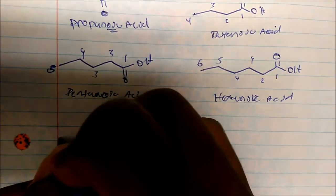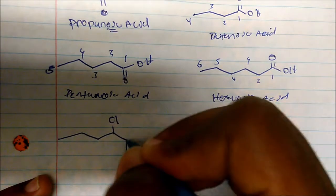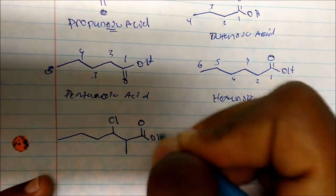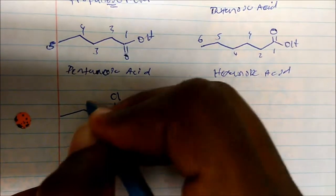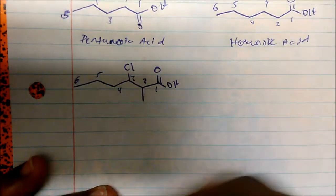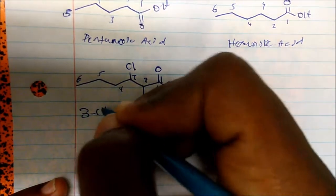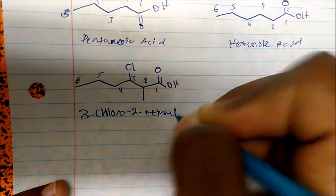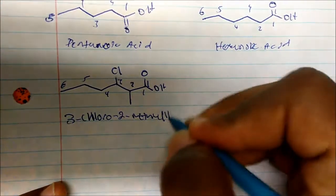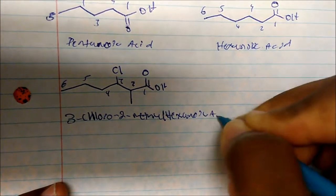Now how do we name this one? We say carbons 1, 2, 3, 4, 5, 6. We list substituents first in alphabetical order, so this is 3-chloro-2-methyl hexanoic acid.